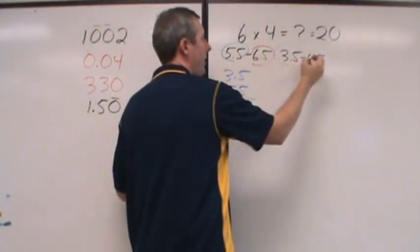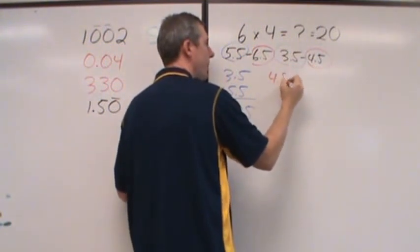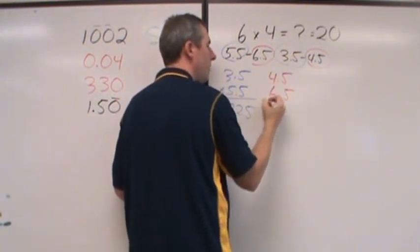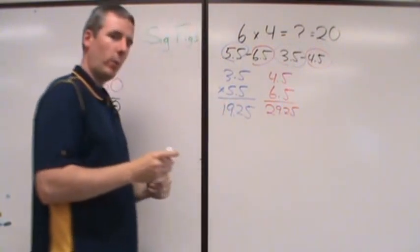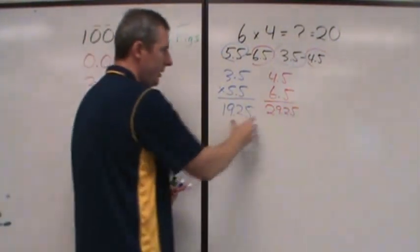If I take the upper ends instead, and I say, okay, 6.5 and 4.5, what if I multiply those two? Well, when I multiply those two, it comes out to 29.25.